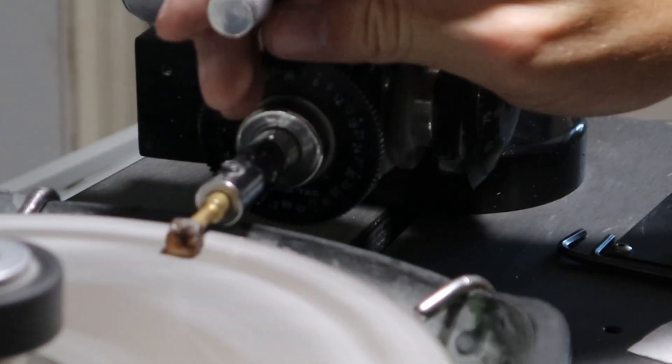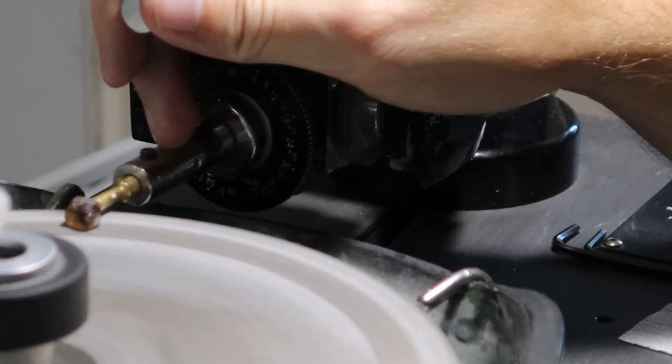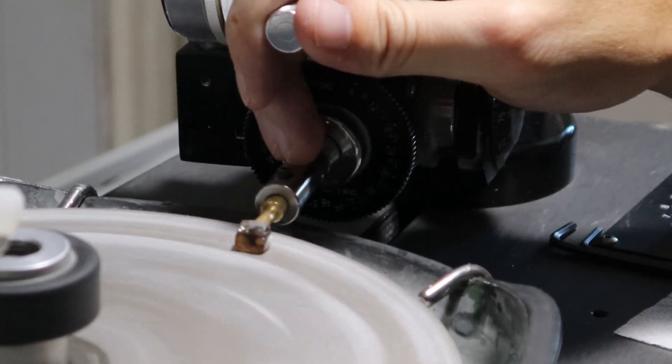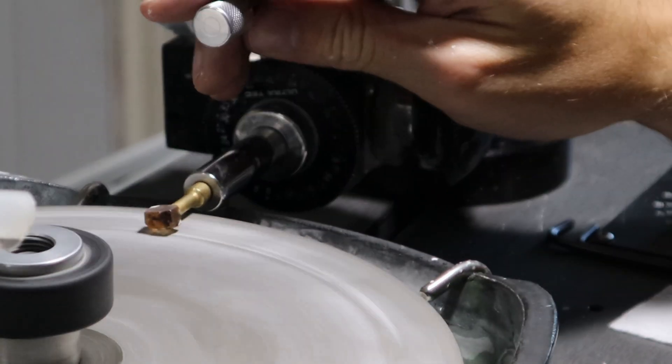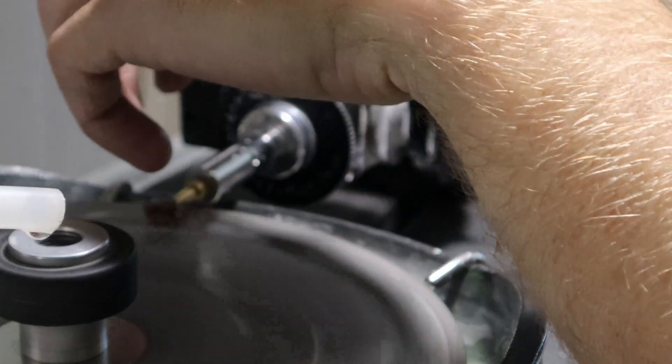This tanzanite piece is fairly valuable so I want to keep the size as large as possible. So instead of using a diagram to cut the stone, I am pre-form cutting it. Basically I just add facets as I go to fit the stone.